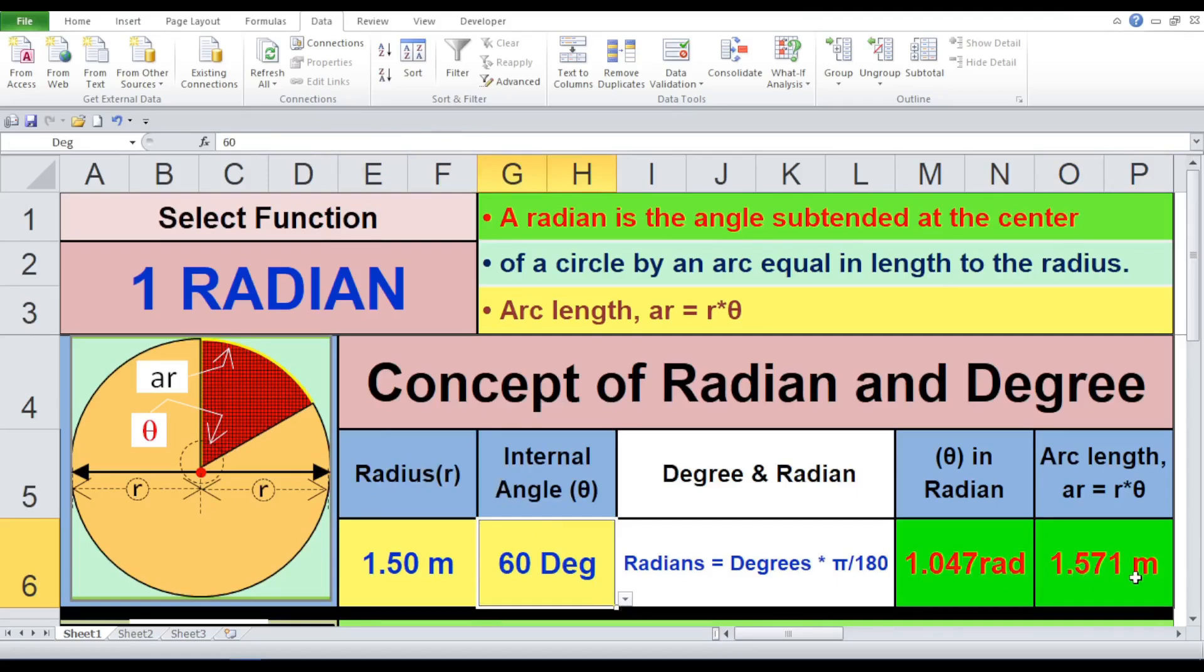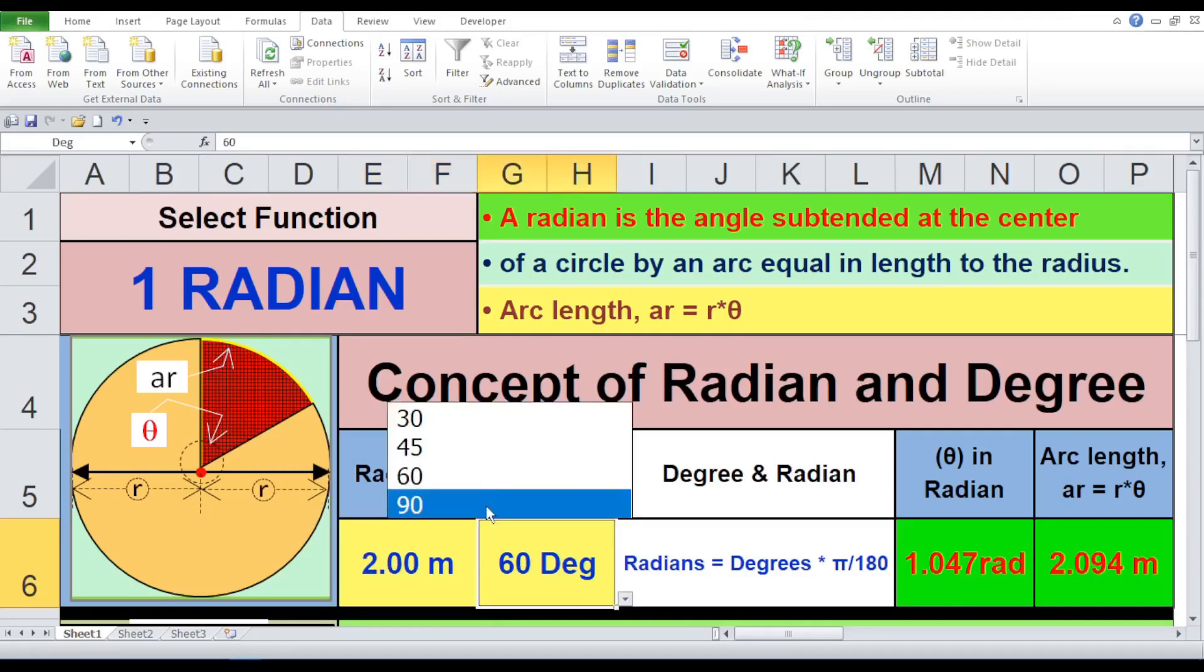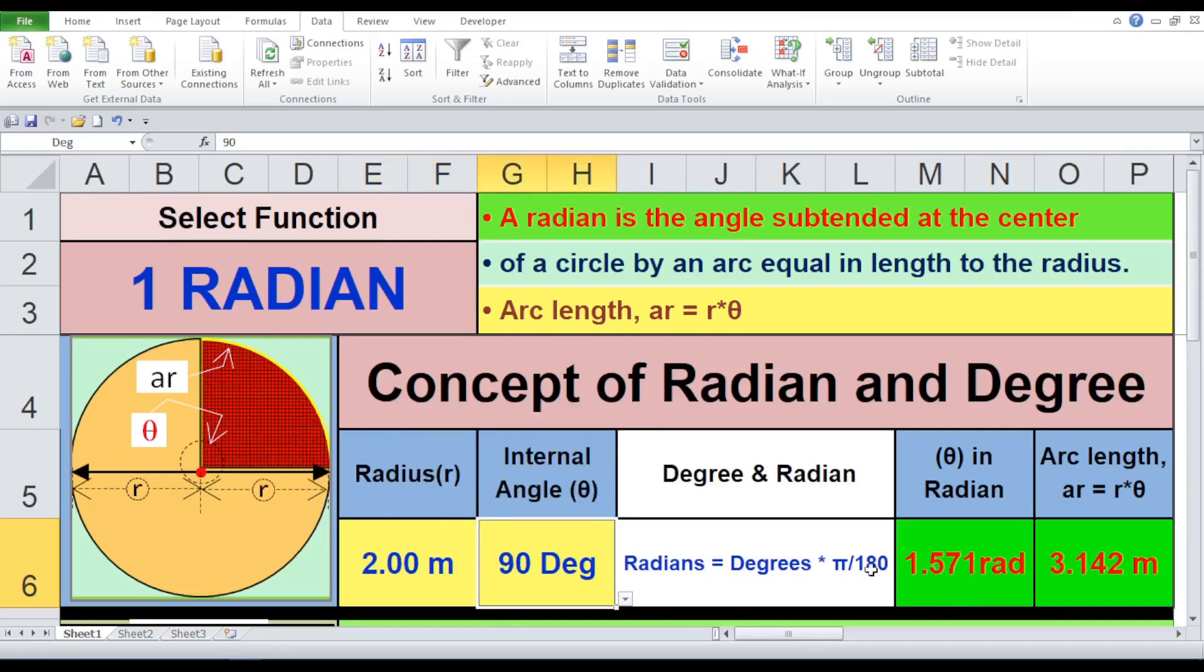Trial 4. Radius 2 meters, angle 90 degrees. And finally, theta equals 1.571 radians, arc length equals 3.142 meters. As you can see, by understanding the concept of radians and using the formula, we can accurately calculate arc lengths for various scenarios. This knowledge is essential in fields like engineering, physics, and computer graphics.